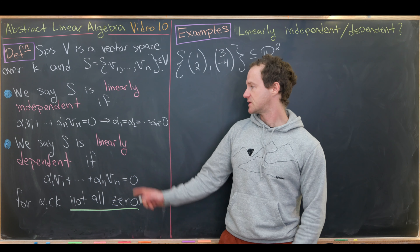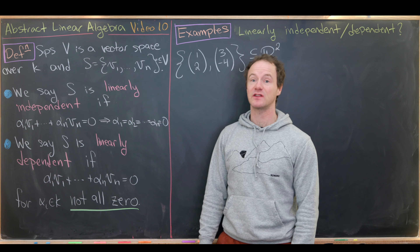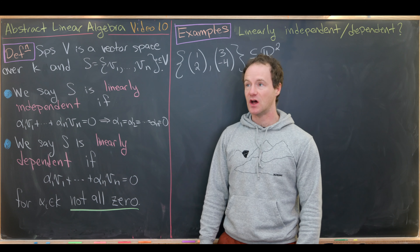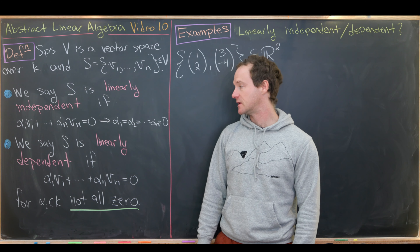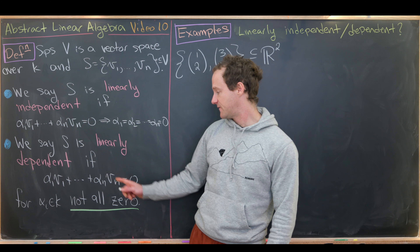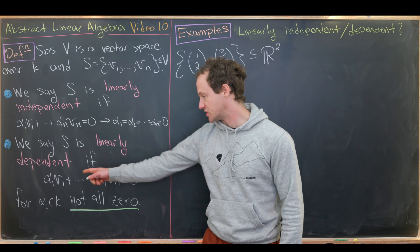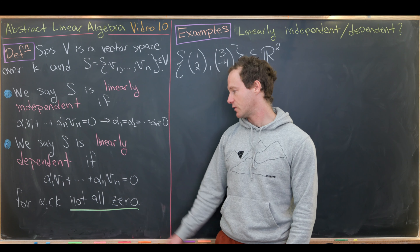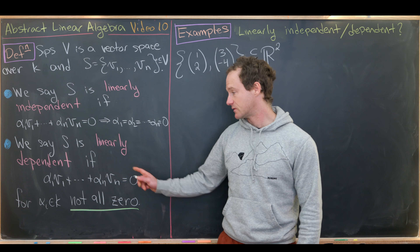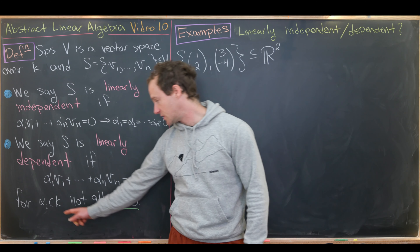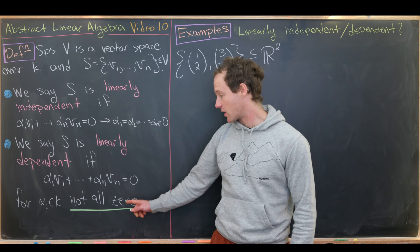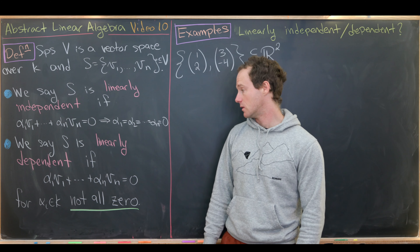We say the set S is linearly dependent — essentially if it's not linearly independent — when the equation alpha_1 v_1 + ... + alpha_n v_n = 0 has a solution where the alpha_i come from the field and they are not all zero.